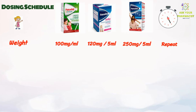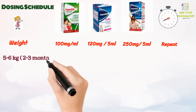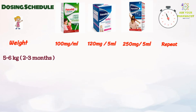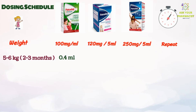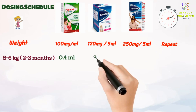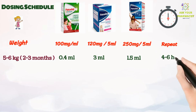If the child's weight is 5 to 6 kg, which is around 2 to 3 months of age, the dose for 100 mg per ml drops will be 0.4 ml. For 120 mg per 5 ml syrup, the dose will be 3 ml. And if using 250 mg per 5 ml syrup, the dose will be 1.5 ml. Repeat this dose after every 4 to 6 hours.